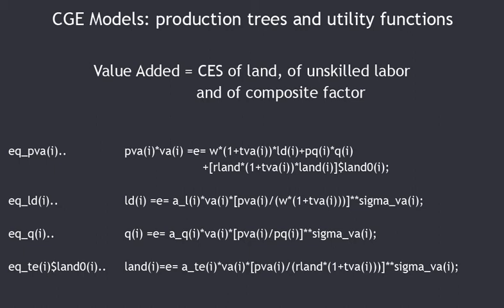For example: LD_i / VA_i = A_L_i × (PVA_i / (W × (1 + TVA_i)))^sigma_VA_i. It is recommended to write this as LD_i = A_L_i × VA_i × (price ratio)^sigma_VA_i, because it is easier to derive this expression in that form. If the price of unskilled labor including taxes increases, the demand for unskilled labor will be reduced, since sigma_VA is positive.